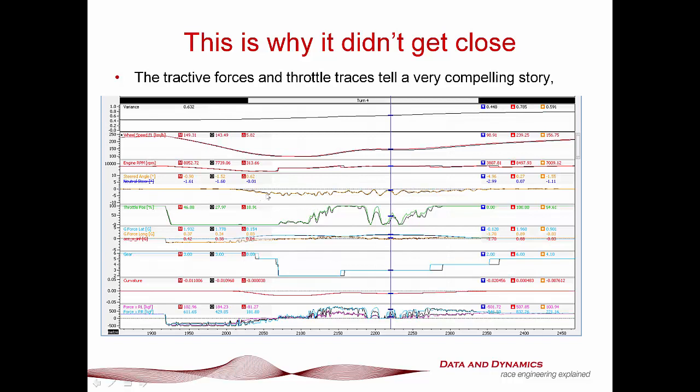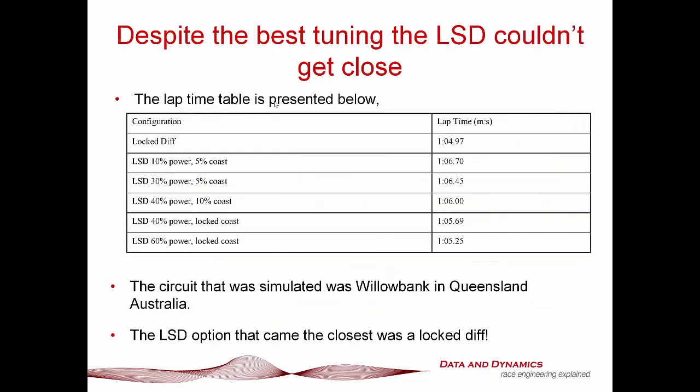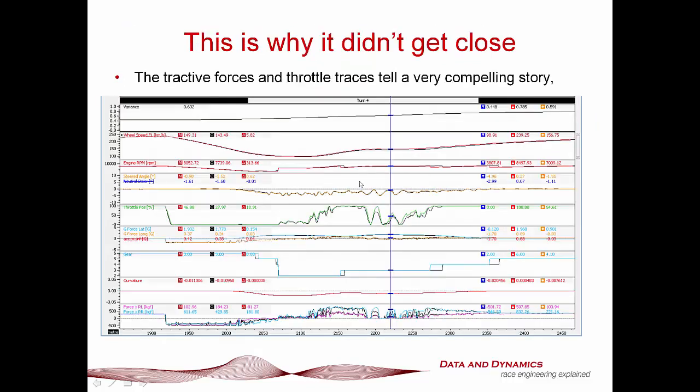And that was one of these things where I was expecting the job to go one way and this job went a totally different way. But sometimes vehicle dynamics does that to you. You get a situation where you expect it to go one way, but it goes another. And that I thought to myself was ever so revealing. And here's why it didn't get close. If we take a look, coloured was the locked diff, black was the LSD. The throttle traces and the tractive forces and throttle traces tell a very compelling story. Take a look at the black throttle trace here, which is the LSD. It's just not getting the power down.